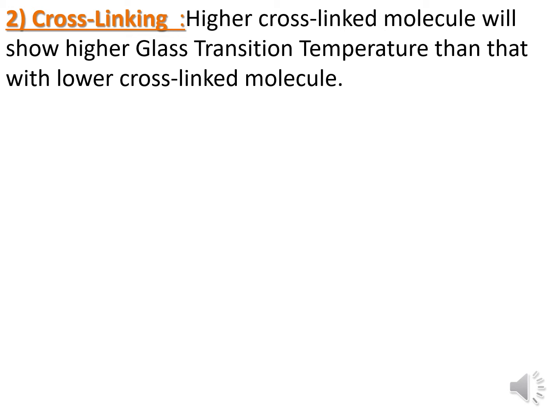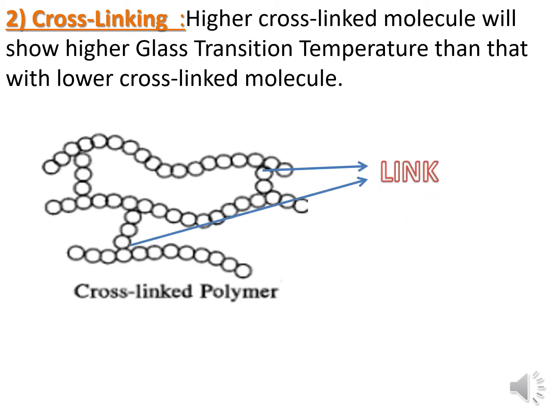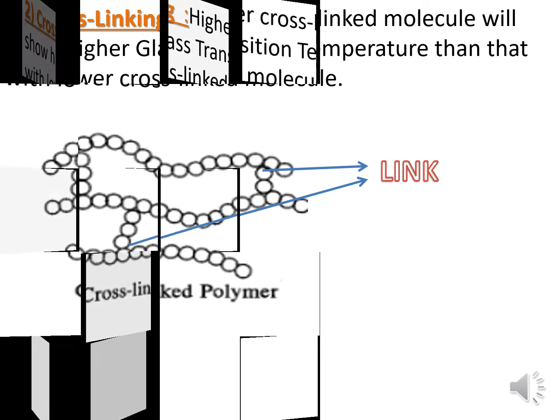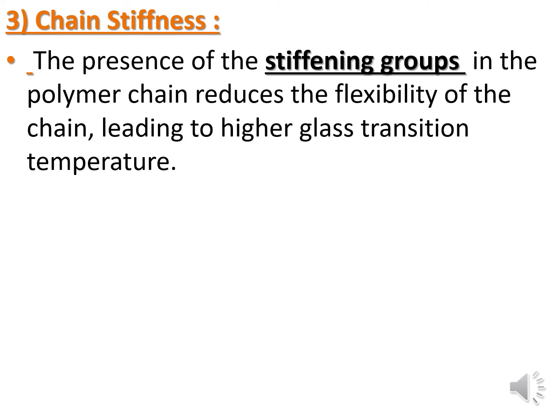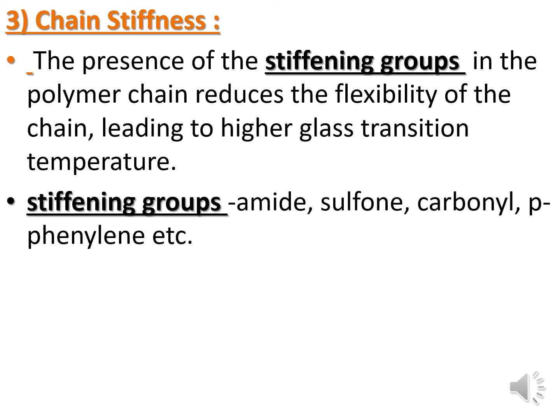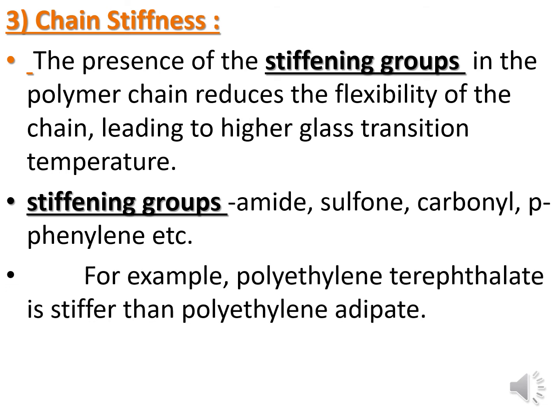Second, cross-linking: a higher cross-linked molecule will show a higher glass transition temperature than one with a lower degree of cross-linking. Third, chain stiffness: the presence of stiffening groups in the polymer chain reduces the flexibility of the chain, leading to a higher glass transition temperature. Stiffening groups include amide, sulfone, carbonyl, and paraphenylene. For example, polyethylene terephthalate is stiffer than polyethylene adipate due to its benzene ring, giving it a higher Tg.